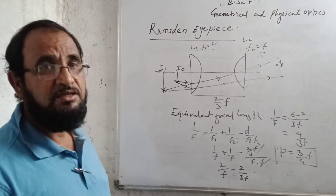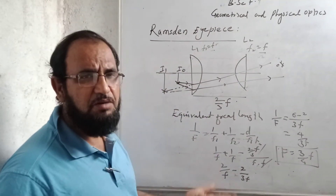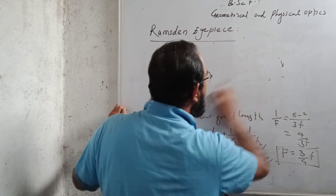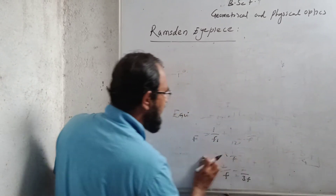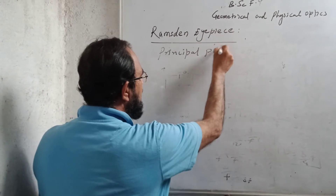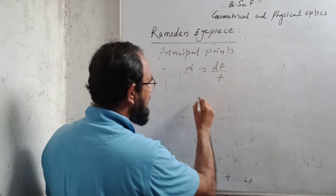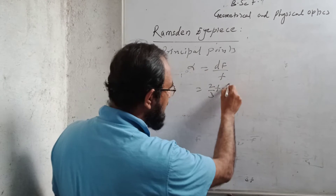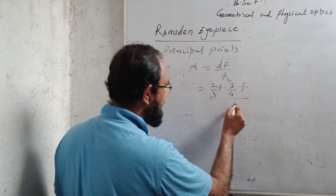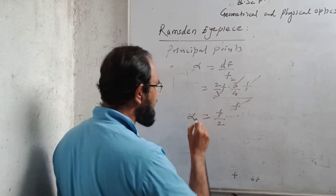Now let us find the cardinal points of this lens system — the principal points, focal points, and nodal points. I will find the position of the first principal point from the first lens. The formula is: α = d·F / f2. Here d = 2/3 f, F = 3/4 f, and f2 = f. The f's cancel and the 3's cancel, giving α = f/2.